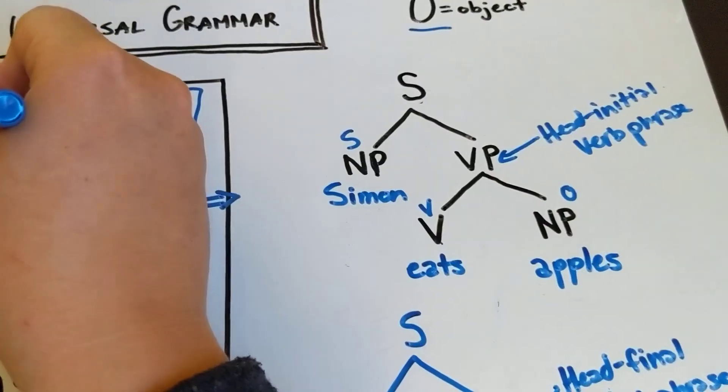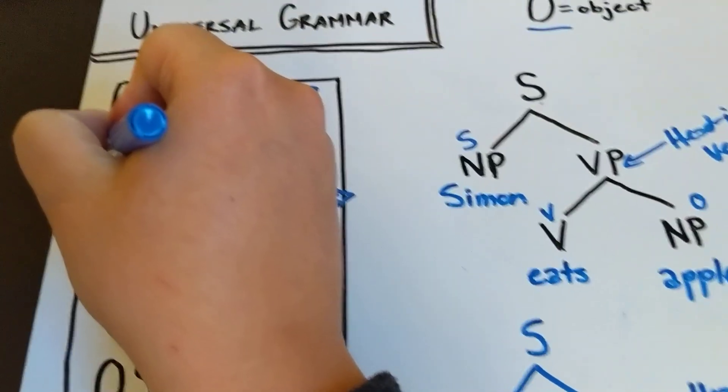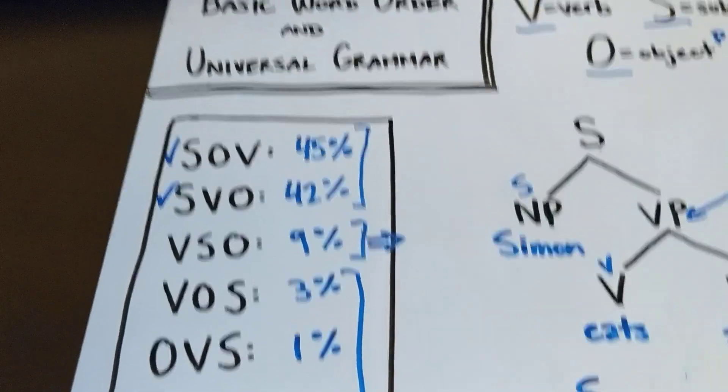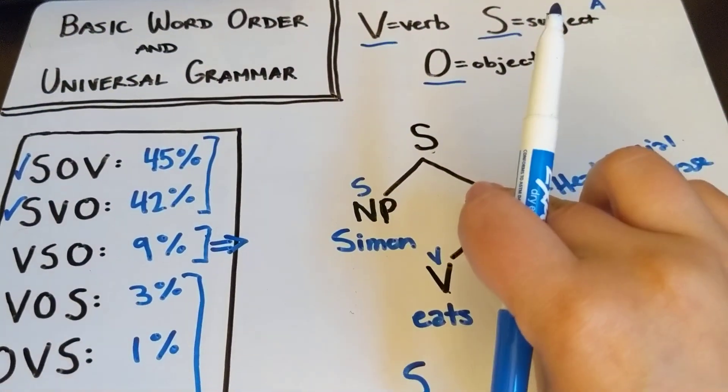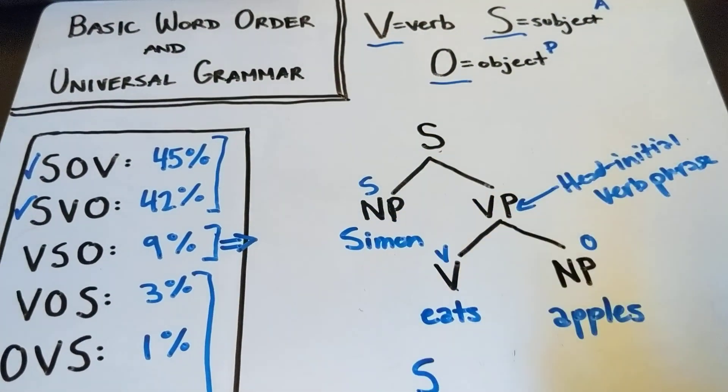So we have now shown how to create this and how to create this. The two most common word orders are just done by switching the order of the verb phrase.